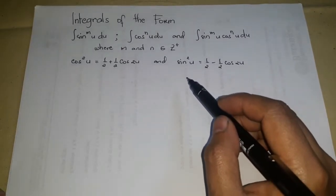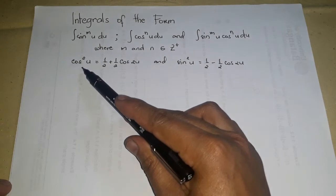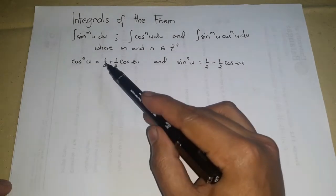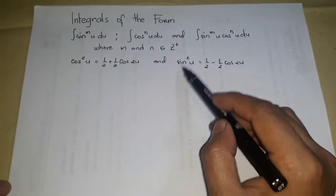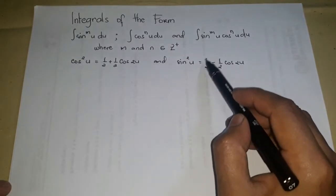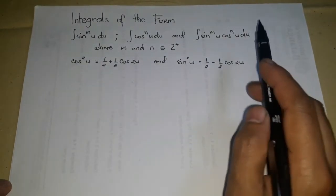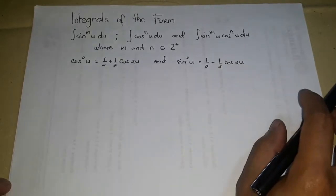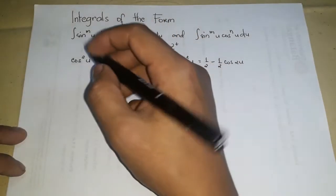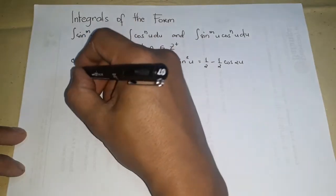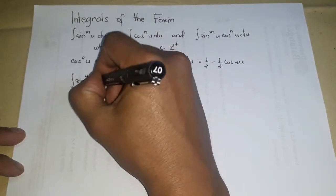The most important trigonometric identities we are going to use are: cos²(u) = 1/2 + (1/2)cos(2u), and sin²(u) = 1/2 − (1/2)cos(2u). With these in hand, let's say we want to integrate sin⁴(x) dx.